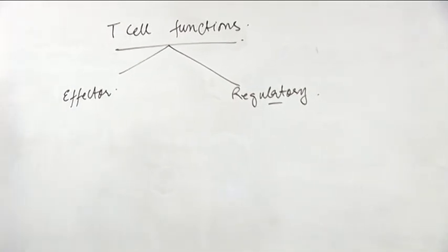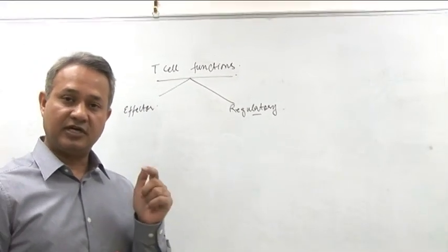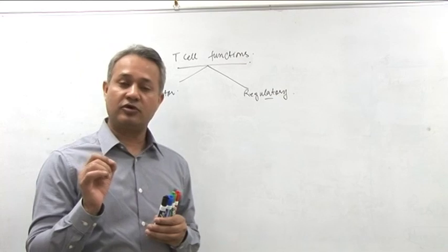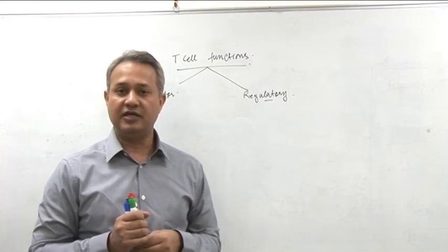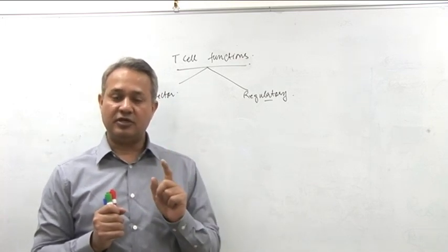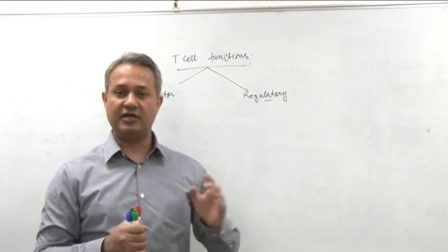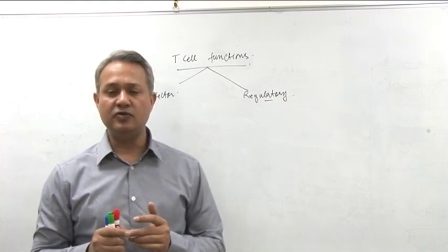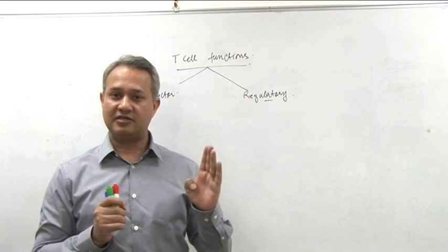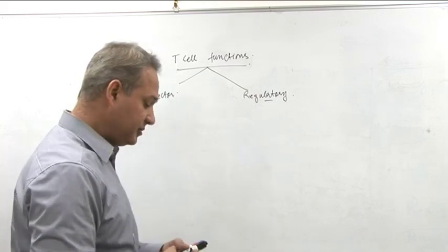Before we start the effector and regulatory functions, we'll start with the interaction of the T-cell with other cells. This is very important — when you are attempting USMLE, a good number of questions are going to be based on whether you understand the interaction of a T-cell with another cell, what it means, and what happens as a result. There is also a huge number of questions about cytokines — the chemical substances released by T-cells and their effects.